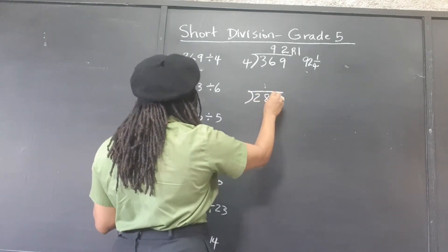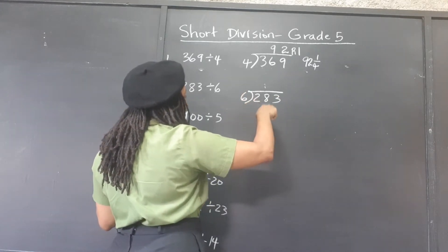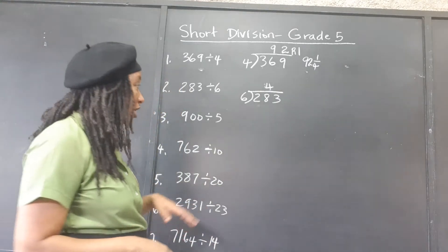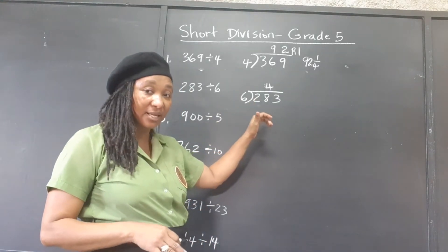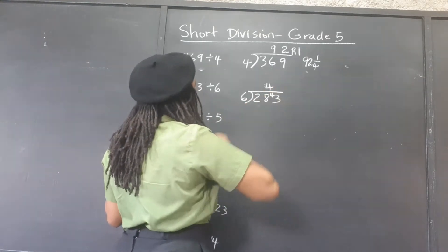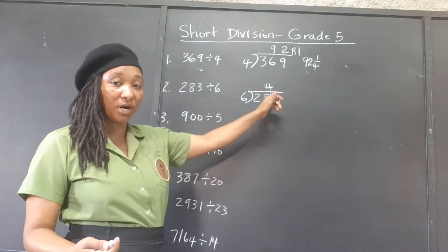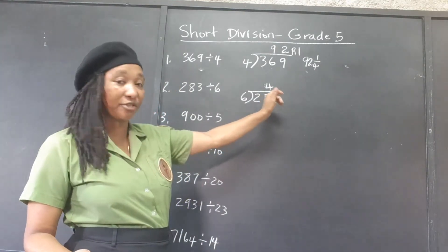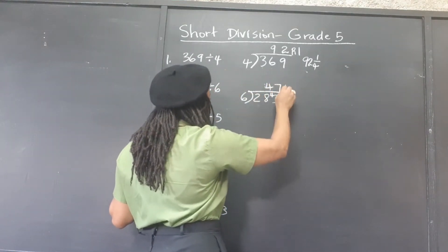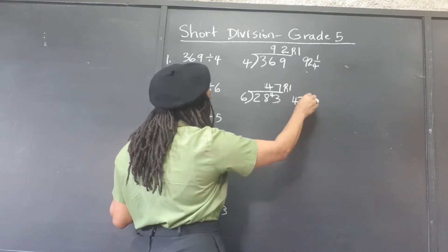283 divided by 6. 6 can't go into 2. 6 goes into 28 four times, because 4 sixes are 24. So out of the 28, if we take 24, 4 is left. We carry the 4 over to the units, so that's 43. And 6 into 43 goes 7 times remainder 1. We can write that as 47 and 1 over 6.